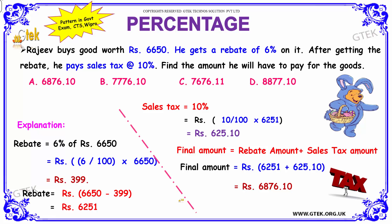The final amount that Rajiv has to pay will be the rebate-reduced value of the goods plus the sales tax amount. After reduction, the value of the goods was 6251 rupees and the sales tax amount is 625.10 rupees. Adding these two gives rupees 6876.10. So option A — 6876.10 rupees — is the answer.